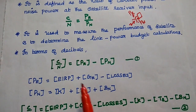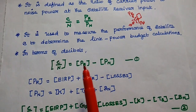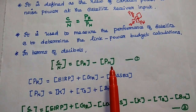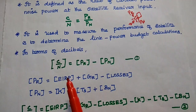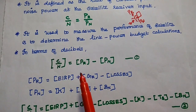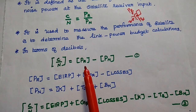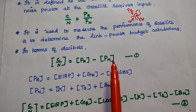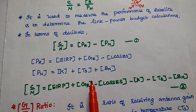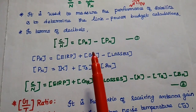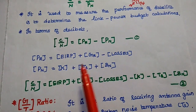In terms of decibels, we can represent this ratio as PR minus PN, where the square bracket represents the value is in decibels. So C/N = [PR] − [PN]. Consider this as the first equation. Here PR is nothing but the received power at the satellite input site.